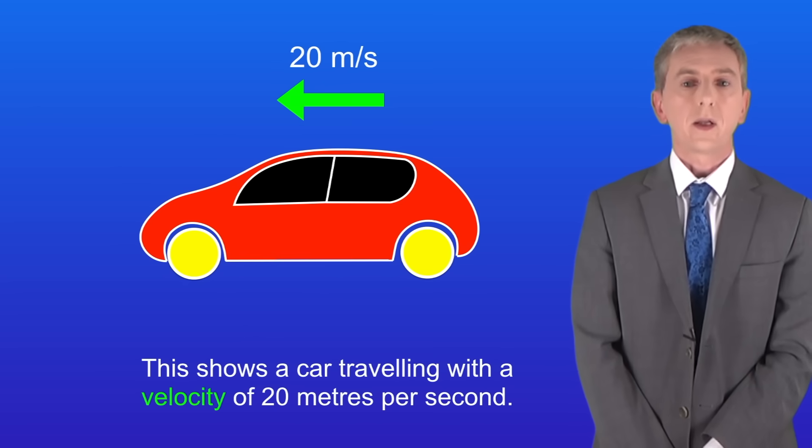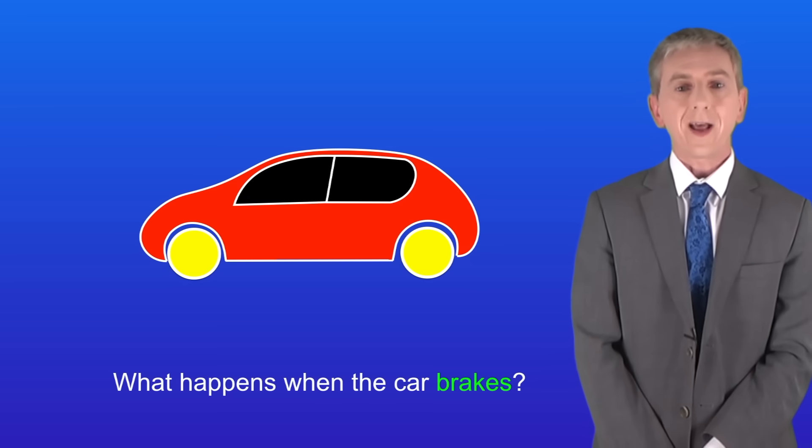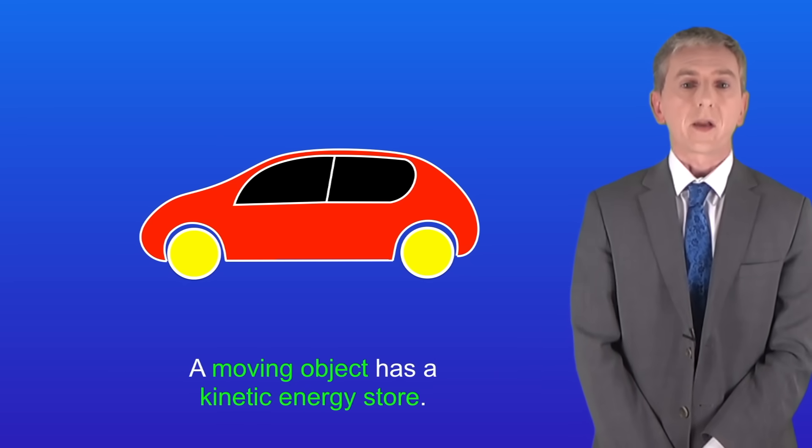Here's another example. This shows a car traveling with a velocity of 20 meters per second. The driver applies the brakes and the car comes to a stop. So what happens when the car brakes? You need to remember that a moving object has a kinetic energy store.